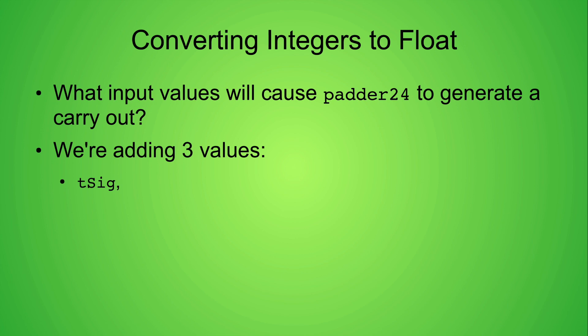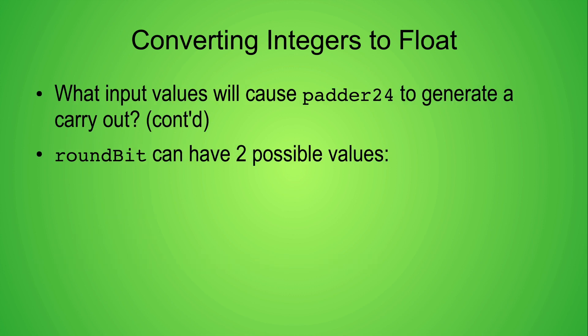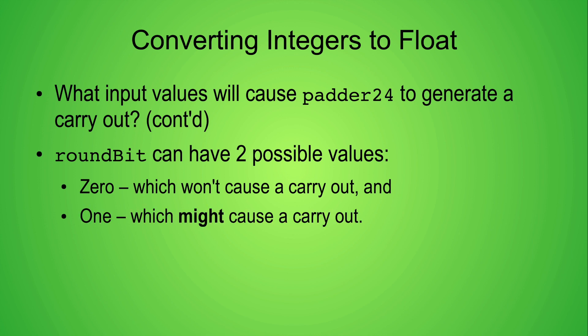This module is adding three numbers: tSig, which is our 32-bit input significand truncated to 24 bits, zero, and roundBit. The input value zero doesn't contribute anything to our sum so it can be ignored. RoundBit only has two possible values, zero and one. In the case that roundBit is zero it won't contribute to the sum so it too can be ignored. The only other value of roundBit which could possibly produce a carryout is when roundBit is set to 1.